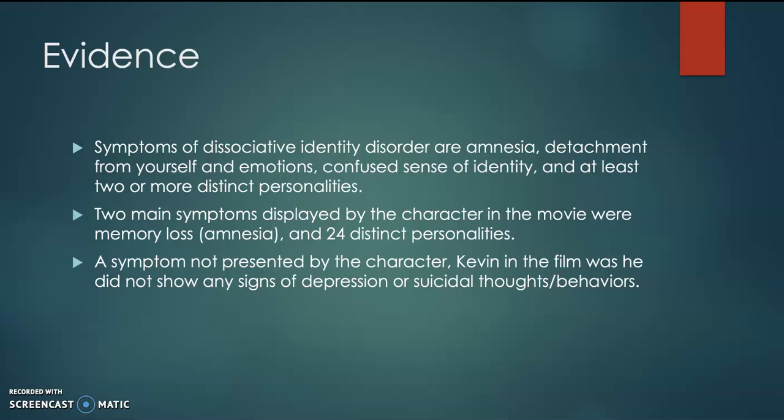Towards the end of the film, Kevin — his true legal identity — came back conscious and had no recollection of the past year, which was an example of his memory loss. The 24 distinct personalities were basically the main characters in the film, scattered throughout. A symptom he did not show was any signs of depression or suicidal thoughts or behaviors, which is another symptom of dissociative identity disorder.